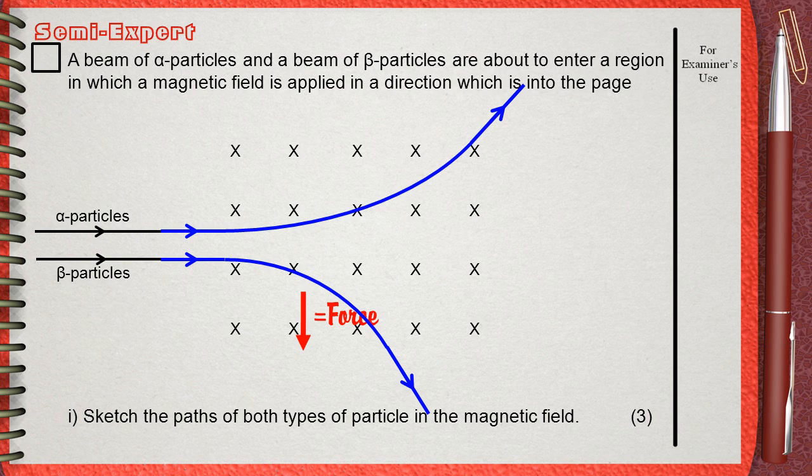An important thing you must notice here. The radius of the curve of the beta particle must be smaller because beta particles are affected with the magnetic field more than alpha particles. The reason is not in electricity. The reason is in Chapter 4 Atomic Physics and Radiation. Beta particles are much lighter and smaller mass than alpha particles, so they are easily pushed by the magnetic field in this direction.